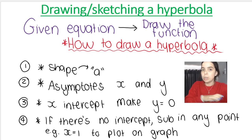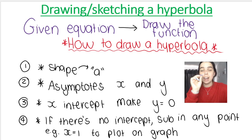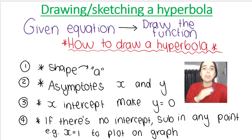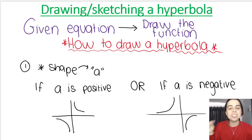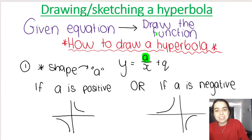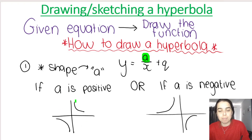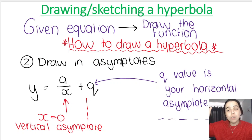Then we decide whether there is an x-intercept. If we make y equal to zero, we can solve for the x-intercept. If there is an x-intercept, we need to plot and label it. If there's no x-intercept, sub in any other point — for example, x equals one — into the function equation to get the value for y, and plot that point. Step one is always looking at 'a' and considering whether it's positive or negative. If 'a' is positive the function looks like this; if negative, it looks like this.